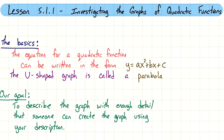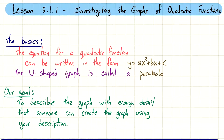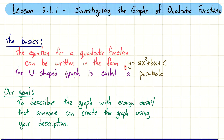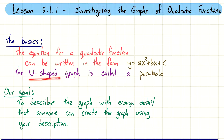So the basics we've already seen include the form in which the equation is written. We've been seeing quadratic expressions before that we've been factoring. This time we're actually looking at it in terms of an equation, so the difference is now it's actually equal to something. We're going to be looking at the graphs of these quadratic functions and what they look like. In general, they look U-shaped, so you should see a U-shape to this graph.